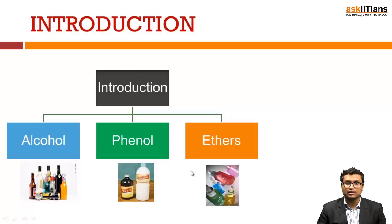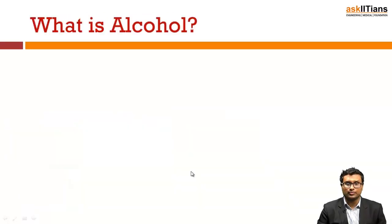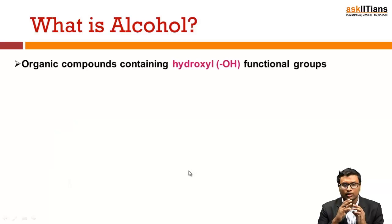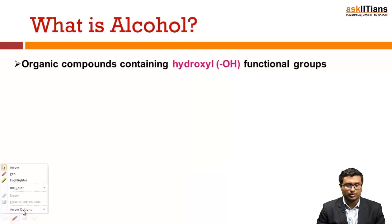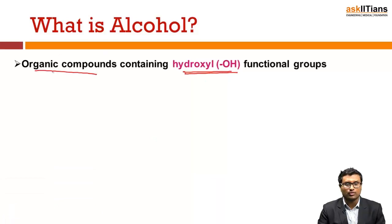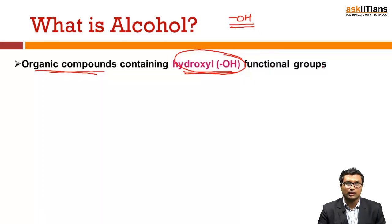Ethers can also be considered as one of the important medicines and are generally used for the treatment of cancer. So what is alcohol? Alcohols are nothing but organic compounds containing the functional group OH. Any organic compound which contains a hydroxyl functional group is an alcohol. OH is nothing but a hydroxyl functional group — it is one of the important functional groups, just like aldehyde, ketone, or carboxylic acid.